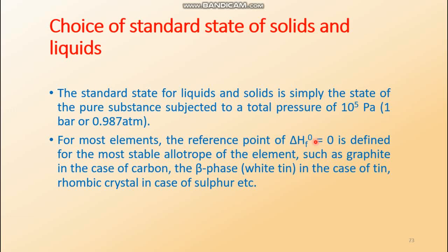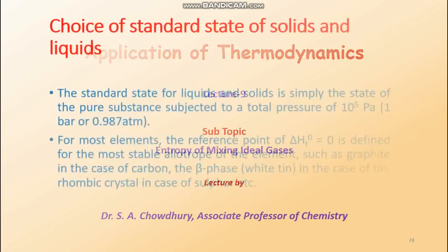For example, oxygen has three allotropes — O atom, O₂, and O₃ — of which O₂ is most stable, so O₂ has ΔHf° = 0. Carbon's most stable allotrope is graphite, so graphite is assigned ΔHf° = 0. For tin, the beta phase (white tin) is most stable; for sulfur, rhombic sulfur is most stable (not monoclinic), so rhombic sulfur has ΔHf° = 0. These are the standard states for solids and liquids. Thank you, have a nice day.